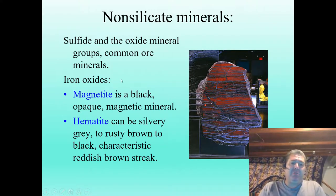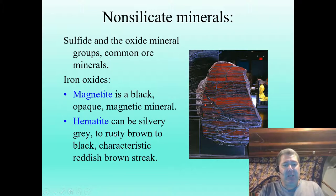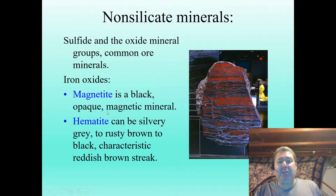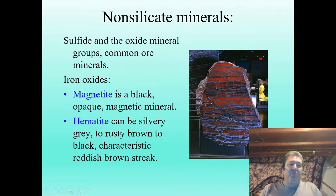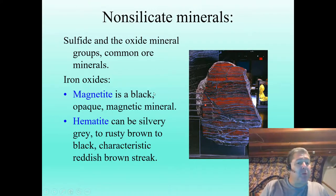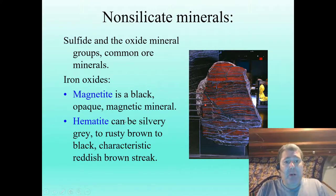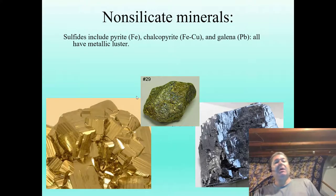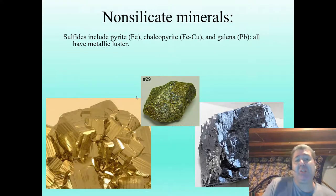If you put magnetite on a streak plate it'll streak black, and hematite will streak red. We're talking Fe2O3 and Fe3O4 — these two love to live together and are often intermixed. They're our primary ore minerals for iron, which we use to make steel. Here in Michigan we produce 25% of the country's iron.